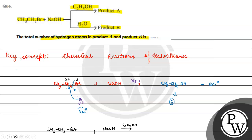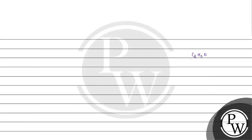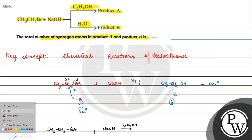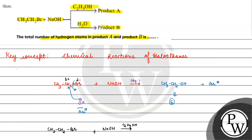Ethanol in alcoholic medium — ethanol has 1 acidic H. This is a base. This acidic H will be extracted. It will result in the formation of ethoxide ion.